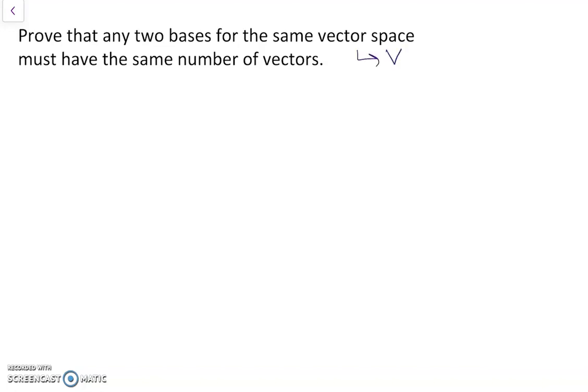And let's say we have two bases. So the bases, we have the vectors V1, V2 up to Vm, and we also have the base W1, W2 up to Wn. So we have two different bases, and we need to prove that M is equal to N.